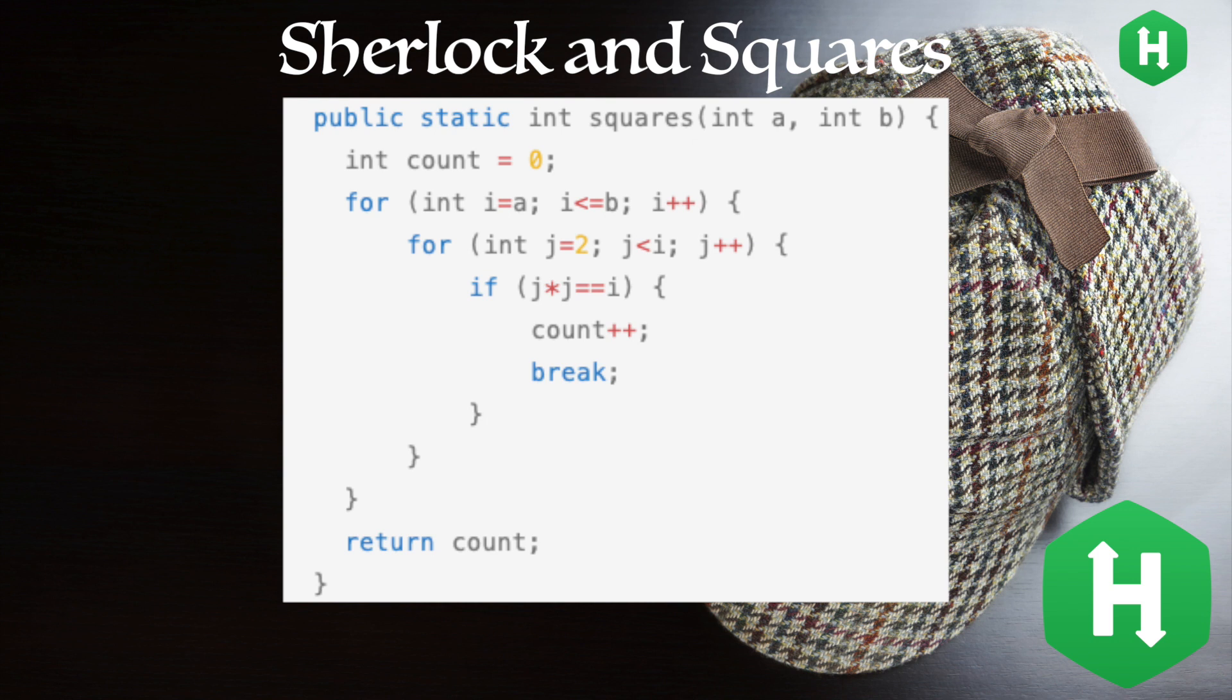The logical approach to solving this problem consists of a nested for loop that evaluates each integer in the given range, incrementing a counter when the integer is found to be a square integer. While this approach works well for small ranges, this solution doesn't work well in terms of processing time for large integers.